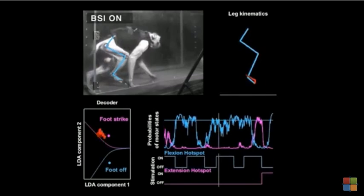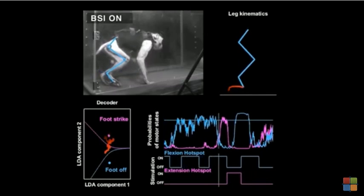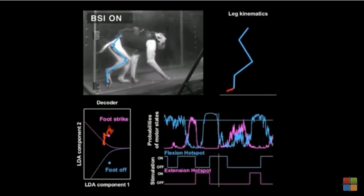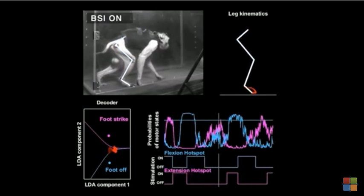The brain-spinal interface instantly restored coordinated weight-bearing locomotion of the paralyzed leg as early as six days post-injury.